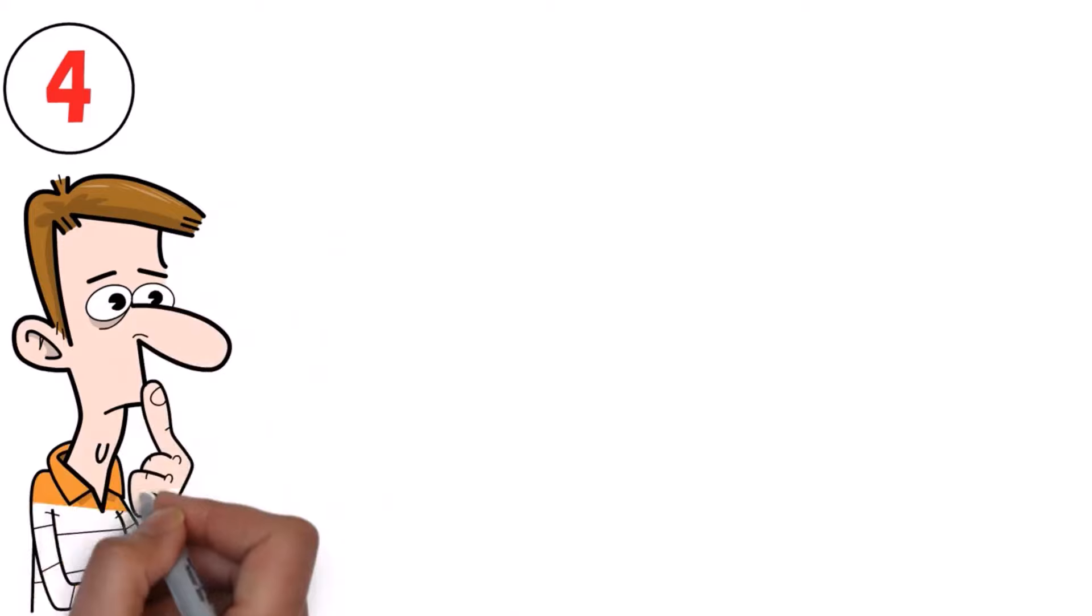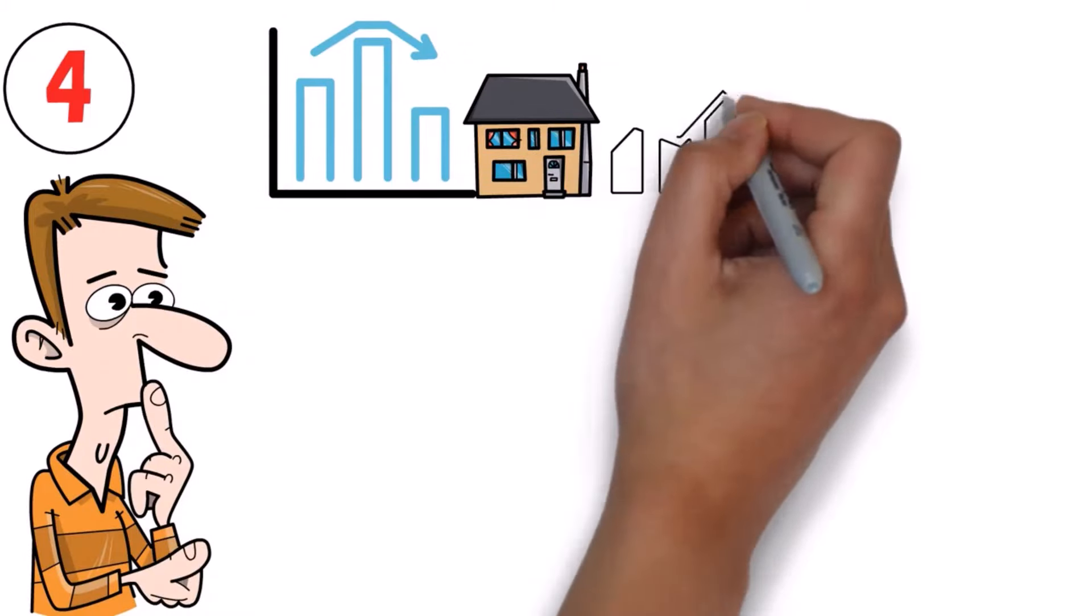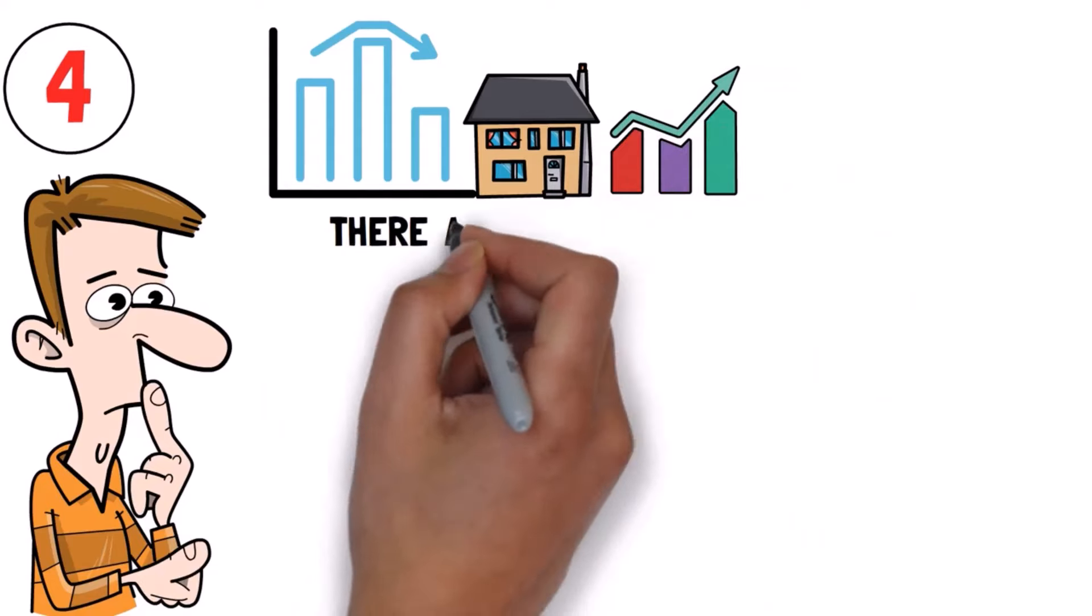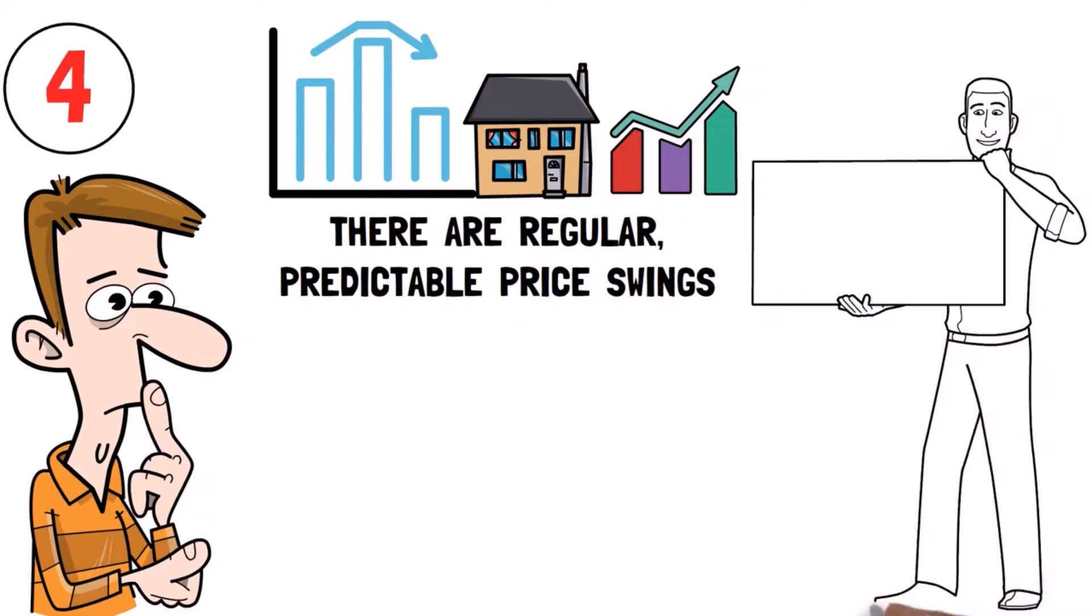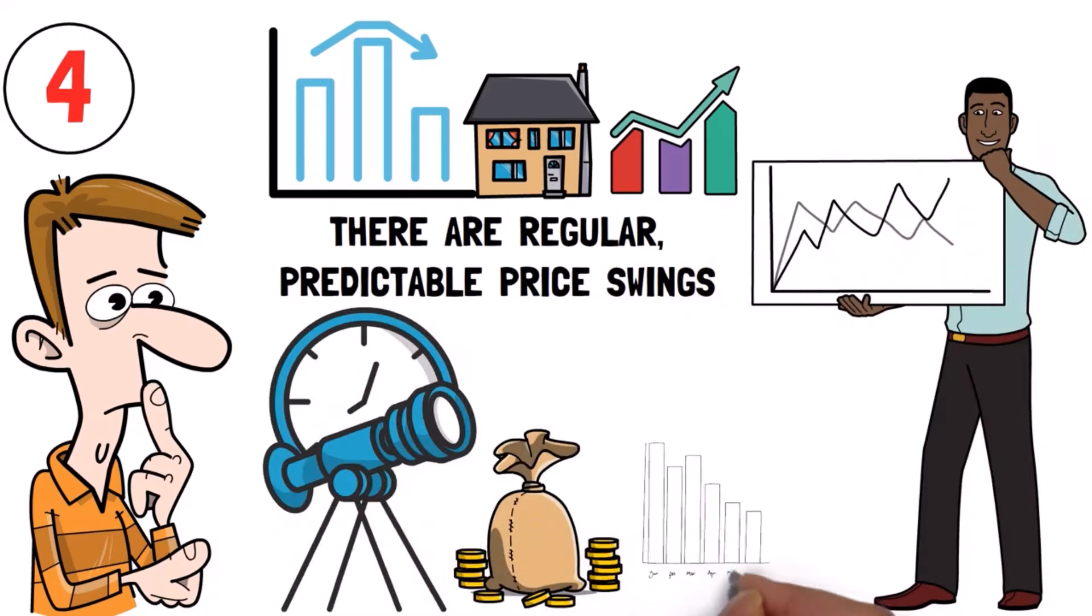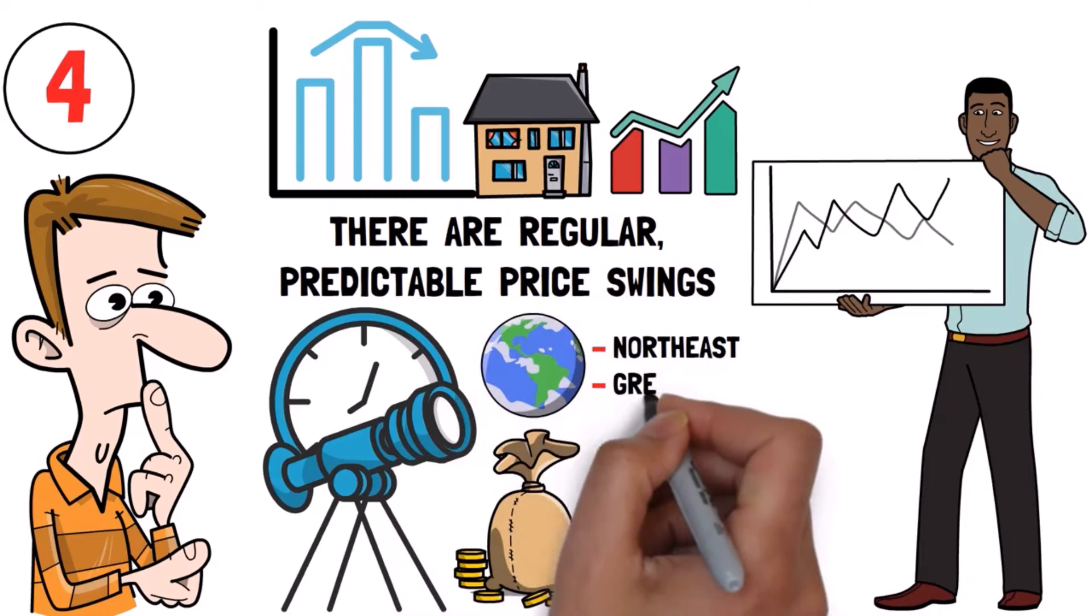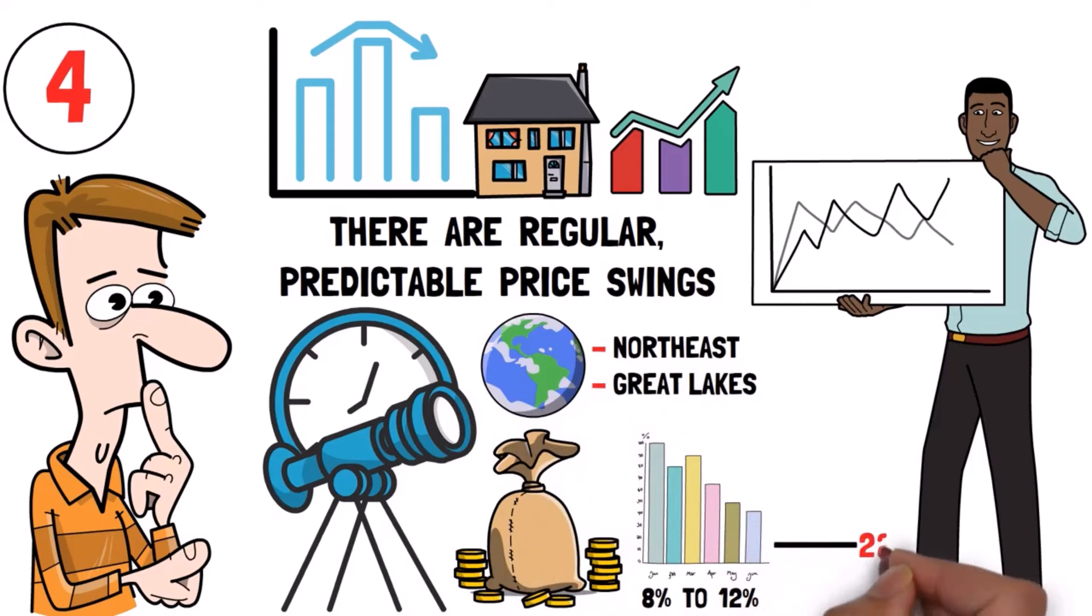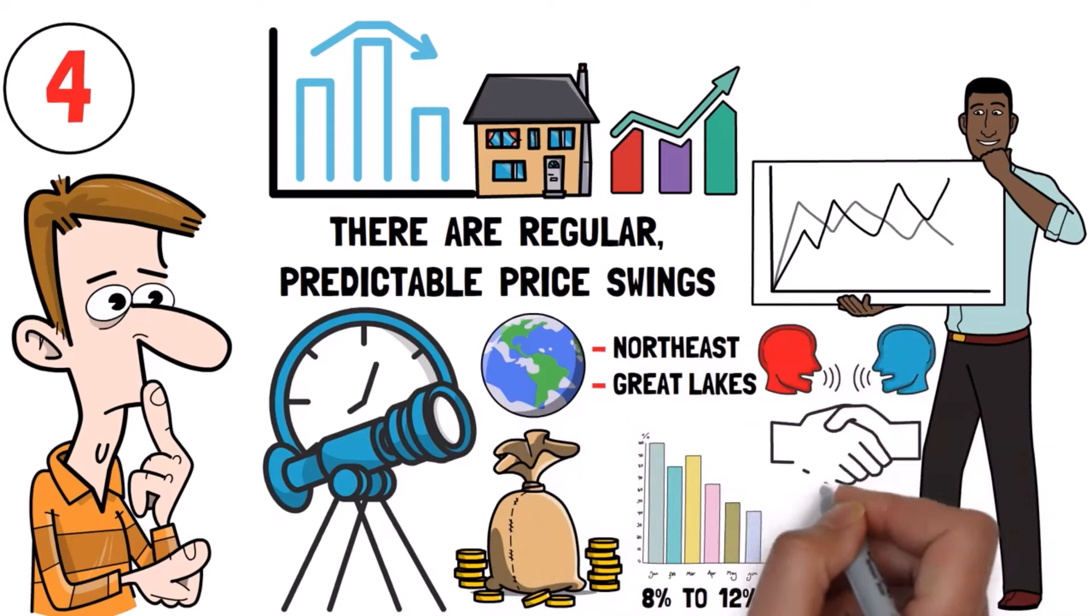Fourth, any drop we do see could likely be due to seasonality. You see, even though housing prices generally rise over time, there are regular, predictable price swings. Currently, we're entering a slower market phase. During these times, prices usually drop by 8% to 12%. In some areas, like the North East and Great Lakes, it can be as much as 22%. So, it's a good time to negotiate if you find the right deal.